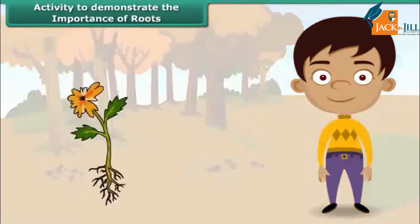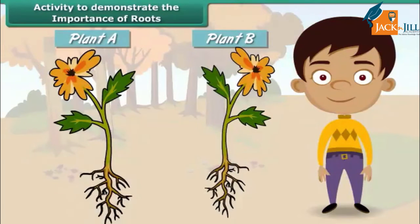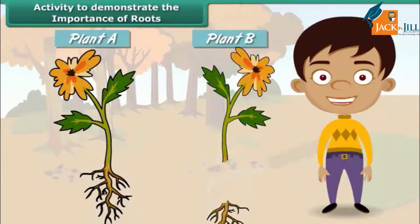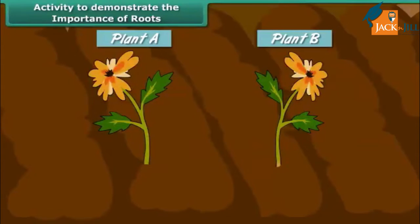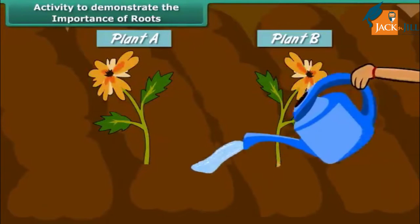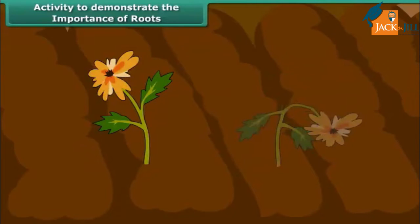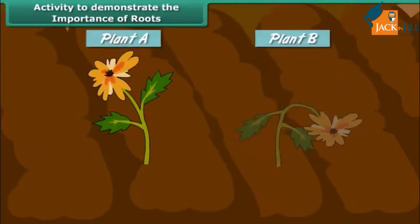Take two plants, A and B. Cut off the roots of plant B. Plant both plants A and B in the soil and water them every day. After a few days, plant A appears as healthy as it was on the first day, whereas plant B appears wilted. This proves that roots absorb water and minerals from the soil and transport them to the other parts of the plant.